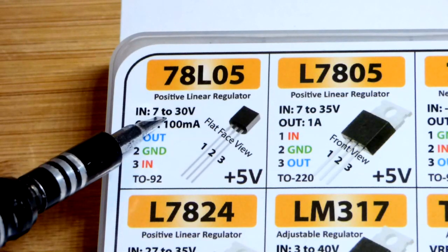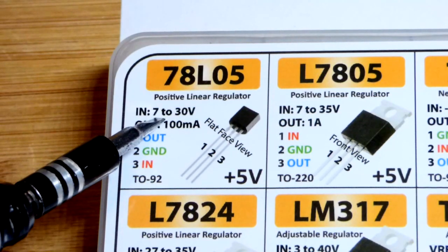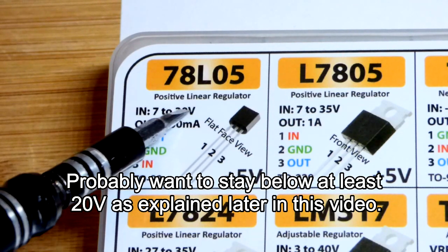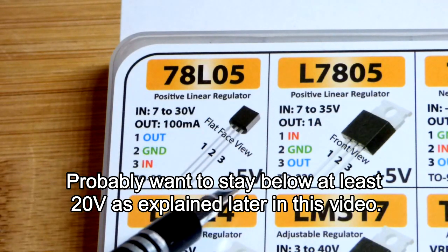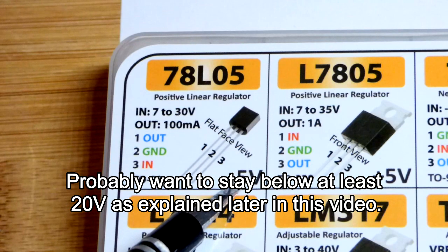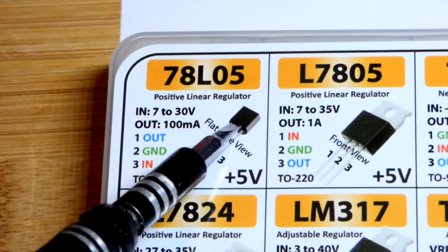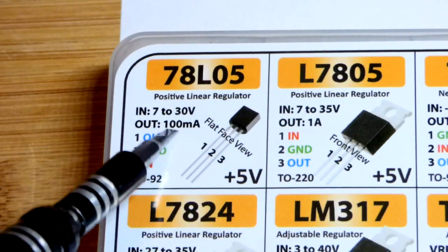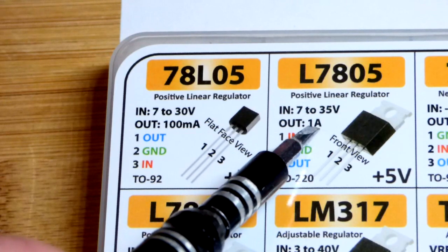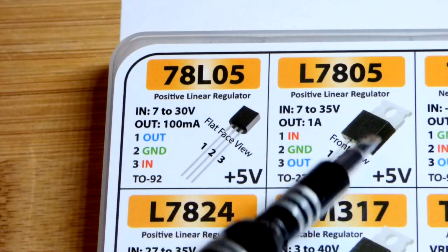So if you have a higher voltage than you desire, in this case 7 to 30 volts according to this, but you need 5 volts, this is a component that you can use. At the lower current, here is the higher current version of it. It can dissipate more heat and whatnot.